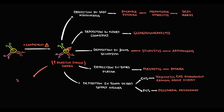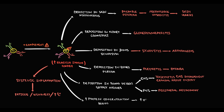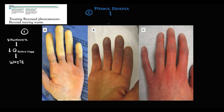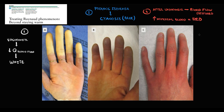Immune complexes cause severe systemic inflammation, manifesting with general symptoms such as fatigue, weakness, and fever. Increasing immunoglobulin protein concentration raises blood viscosity, which can cause Raynaud's phenomenon. The first step is vasoconstriction or occlusion of arterioles, decreasing blood flow to the digits — causing ischemia and white digits. The second step is prolonged ischemia causing cyanosis — blue digits. The third step is restoration of blood flow after constriction resolves, causing redness.